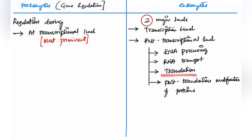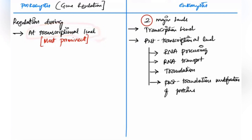In eukaryotes, regulation can also happen during RNA transport from the nucleus to ribosomes, during translation, or through post-translational modification, which can control the ability of the protein to function. But why is regulation most prominent only at the transcription level in prokaryotes?